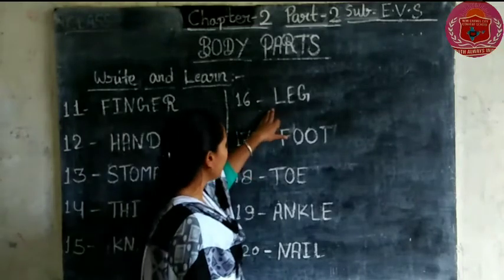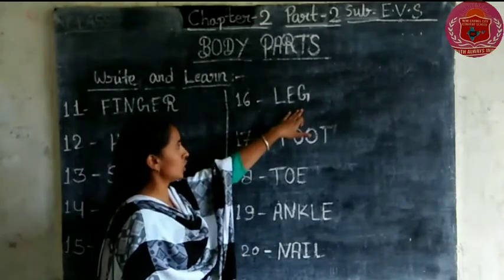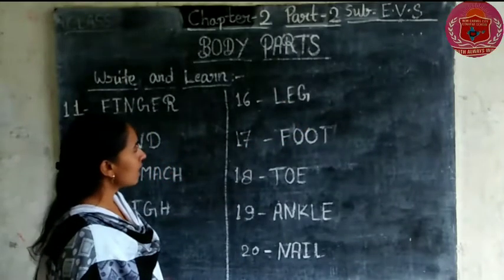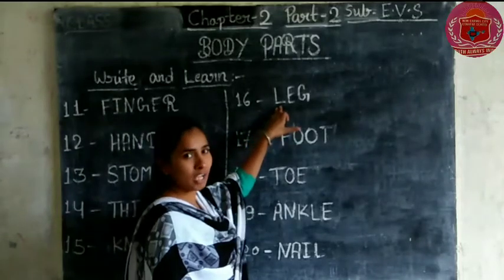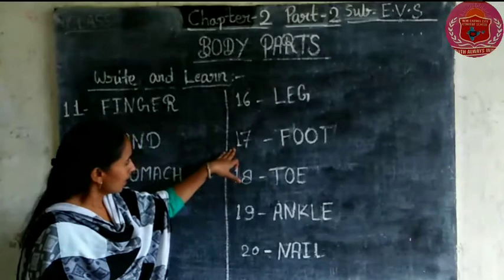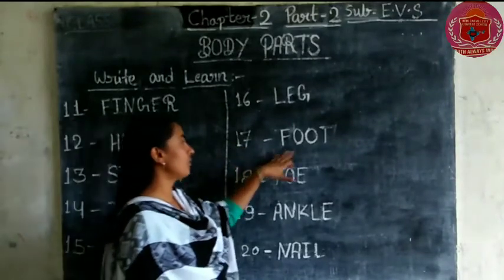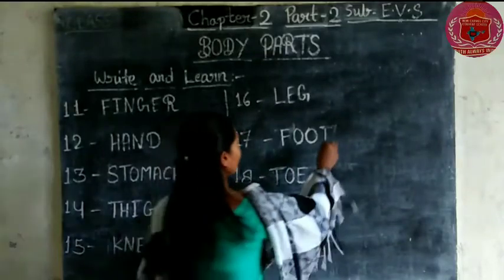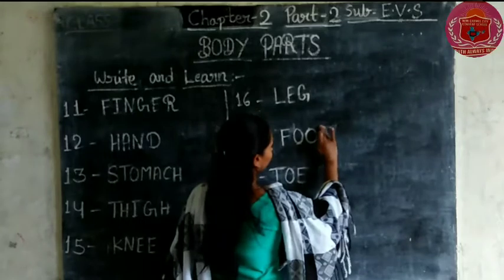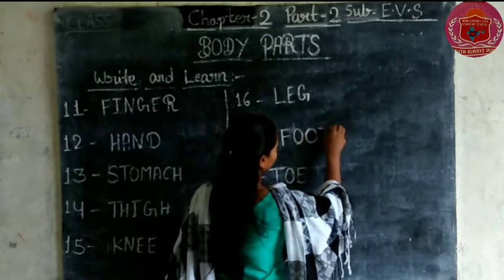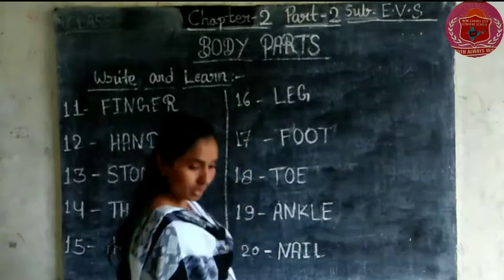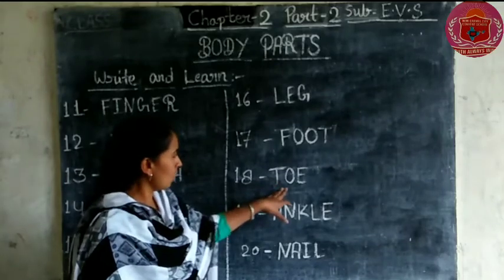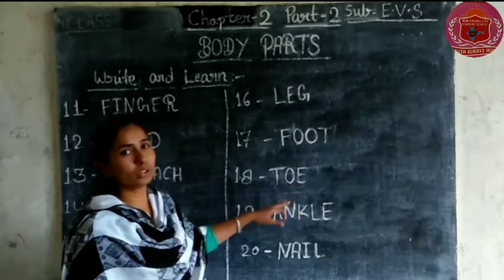Second column: leg. L-E-G. Leg means pair. Next is foot. F-O-O-T. Foot. The next is toe. T-O-E. Toe means pair ki ungli.